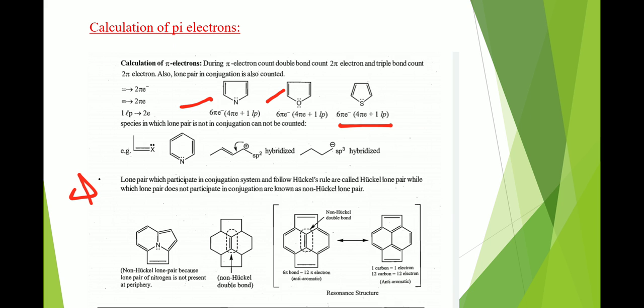A lone pair that participates in conjugation and follows Hückel's rule is called a Hückel lone pair, while a lone pair that does not participate in conjugation is known as a non-Hückel lone pair.